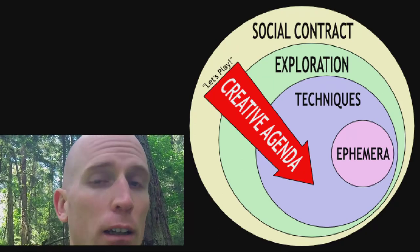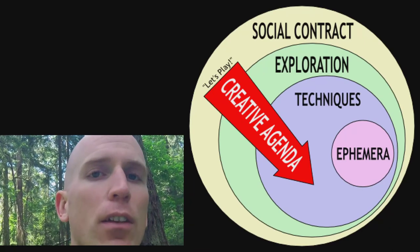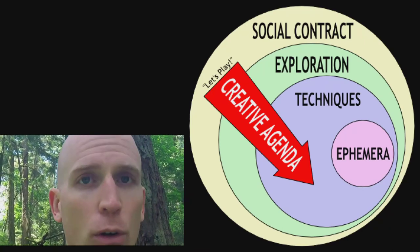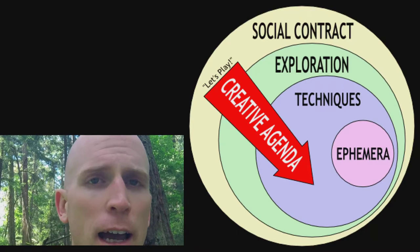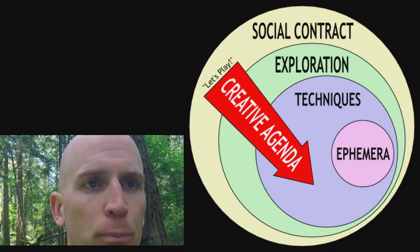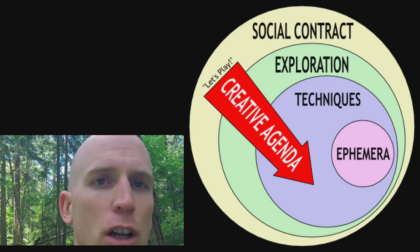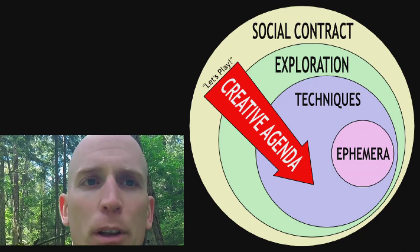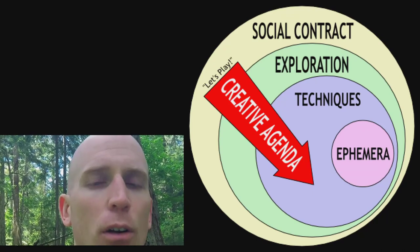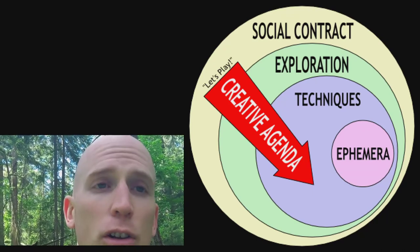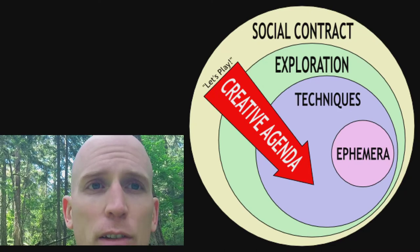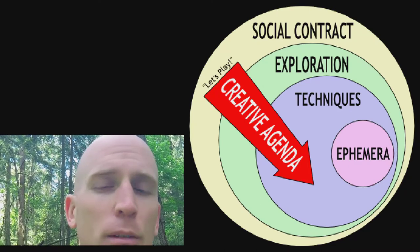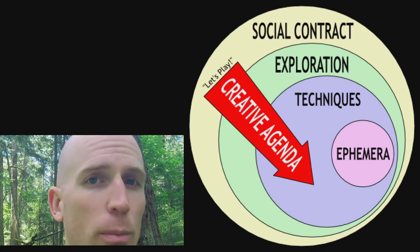Within the social contract lies exploration — that is to say that all exploration happens within the context of the social contract. This represents the imagination of the fictional events, something I brought up in the simulationist video. It includes character, setting, situation, system, and color, and is sometimes referred to as the shared imagined space.